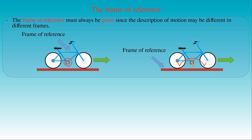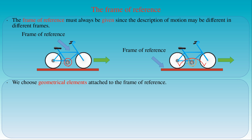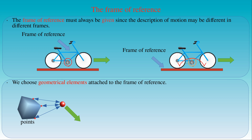If we want to describe the position of a body with respect to a given frame of reference, then we need to define some points, lines, or surfaces — that is a set of geometrical elements attached to the frame of reference. Then we can measure the distances of these elements from the given body, which uniquely determines its location in space. If we attach multiple points to the object chosen as a frame of reference, as in this figure, then the instantaneous position of the moving ball can be uniquely determined by its distances from those points.